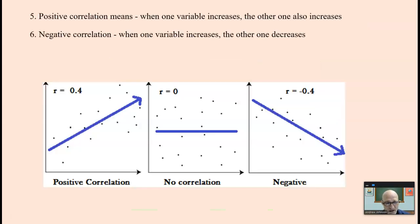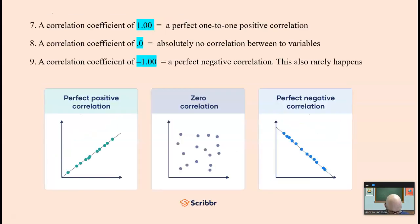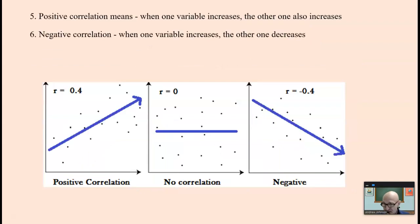Positive correlation, again, when one variable increases, like the number of minutes read, so do scores. Negative correlation is when one variable increases, the other decreases. For example, number of minutes watching TV goes up, we might assume that GPAs or other scores go down. But here's the thing: number of minutes watching TV goes up, GPA scores go down. We cannot say that watching TV causes the other to go down. However, they are highly correlated. There's a co-relationship.